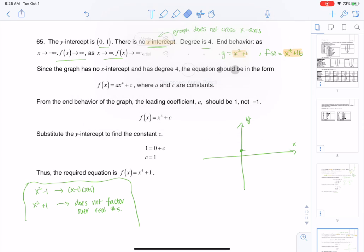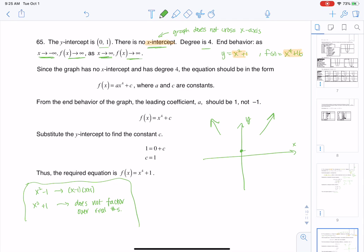Let me erase what I have here. As I head left, I go up. As I head right, I also go up. Something like this. So I think that could be my graph.